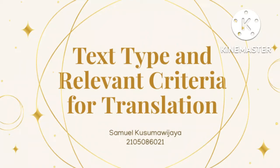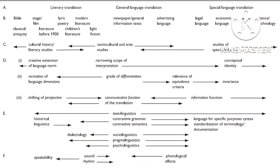She divides it into six levels. In Level A, she sets out to integrate literary, general language, and special language translation into a single continuum, rather than isolating them according to separate areas of translation.